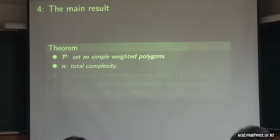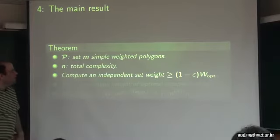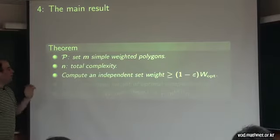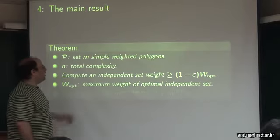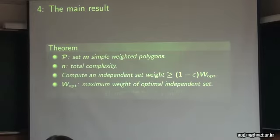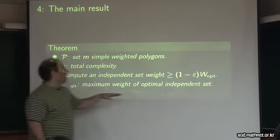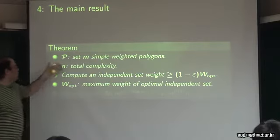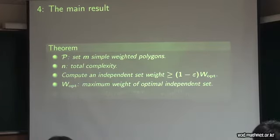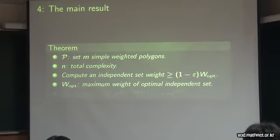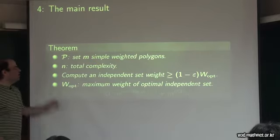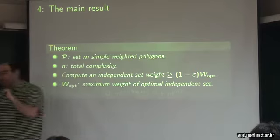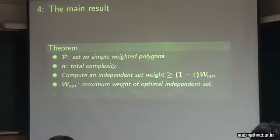So the main result of this paper is the following. You're given a set of m polygons, n is the total complexity, and you can compute an independent set where the total weight of the set is 1 minus epsilon times w_opt. So w_opt is the weight of the optimal solution — the polygons have weights, you want the subset of polygons with maximum weight such that no pair of them intersect. Epsilon is a parameter you have to specify in advance.